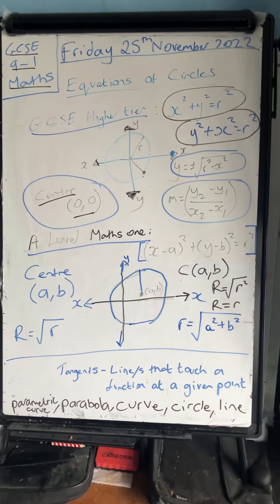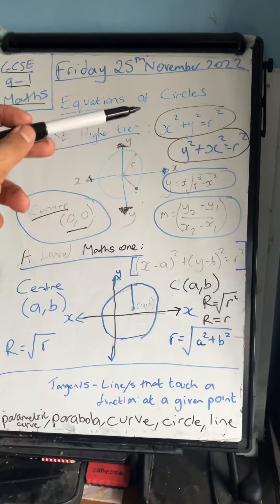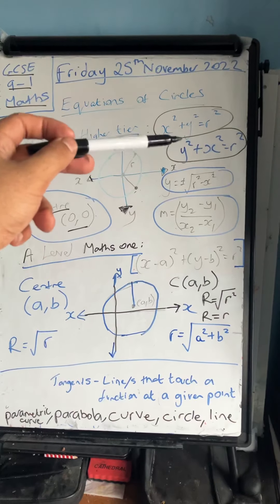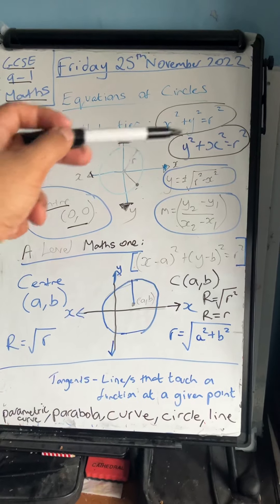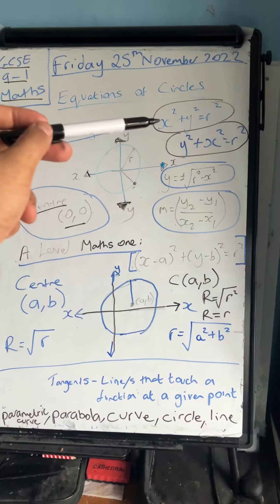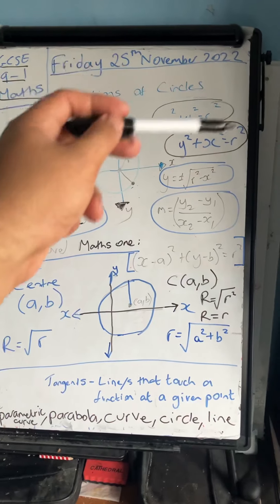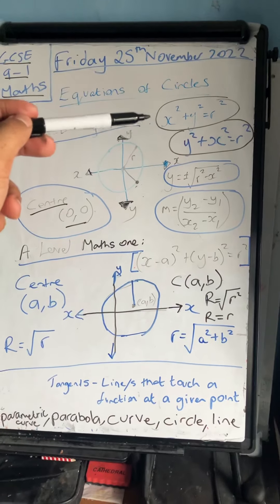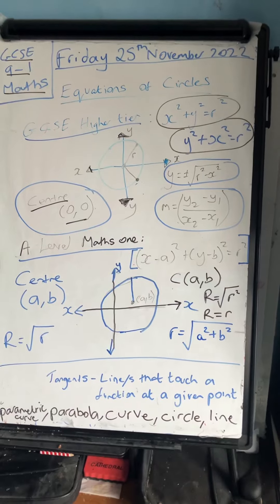These are the different ways that the equation could be written: it could be y squared plus x squared equals r squared, or y equals plus or minus the square root of r squared minus x squared. Make sure that you're happy and familiar with equations of circles.